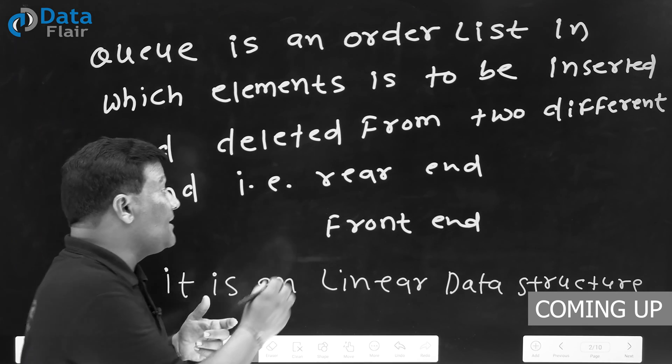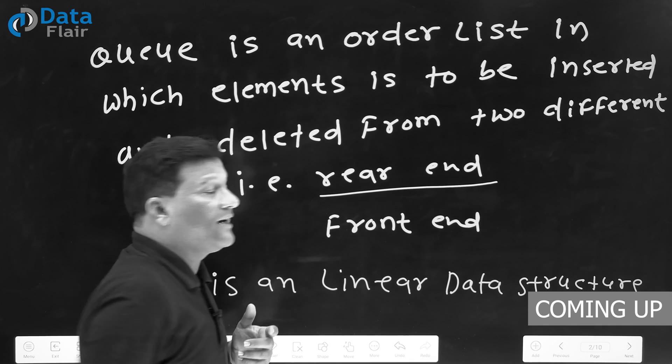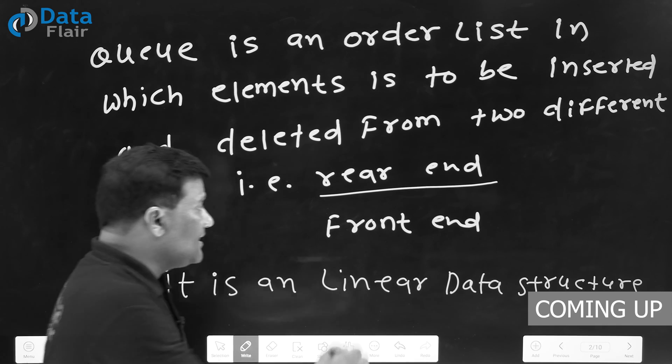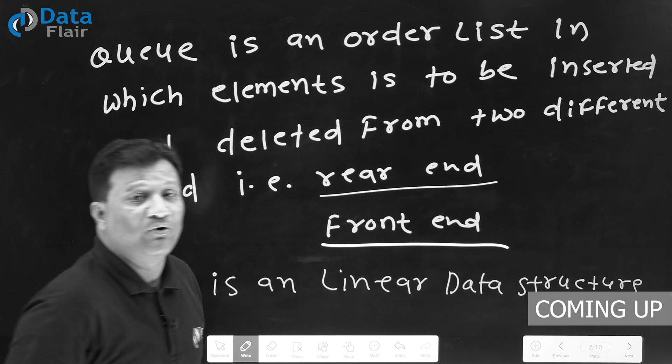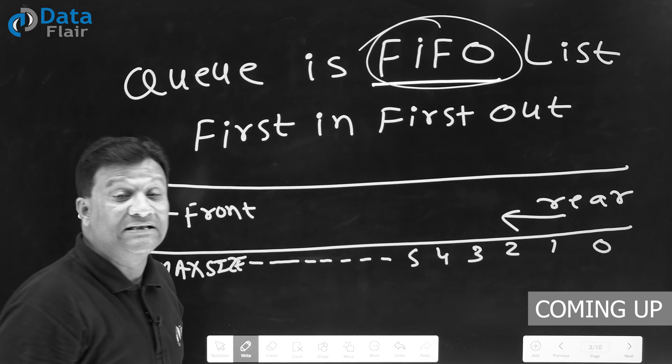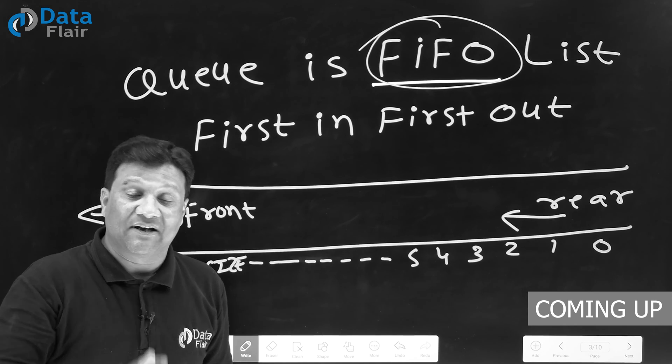Which end we insert the element is the rear end. And which end we delete the element is called the front end. Queue is a FIFO list - first in, first out.